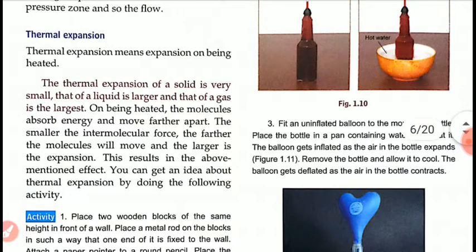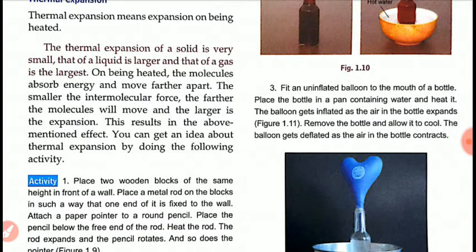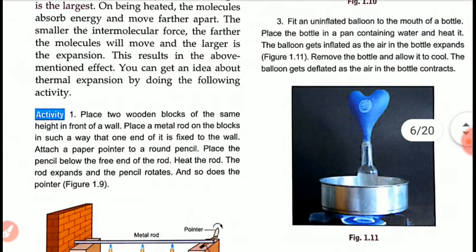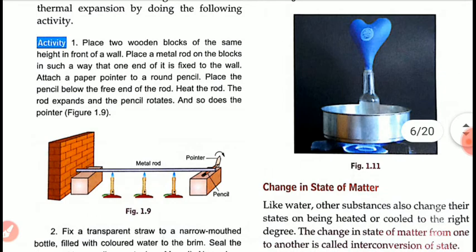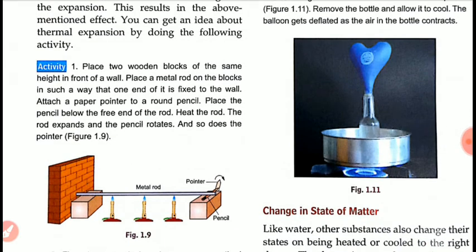We can demonstrate thermal expansion with an activity. Place two wooden blocks of the same height in front of a wall and place a metal rod on the blocks so that one end is fixed to the wall. Attach a paper pointer to a round pencil placed below the free end of the rod. When you heat the rod, it expands, the pencil rotates, and so does the pointer — proving thermal expansion in solids.